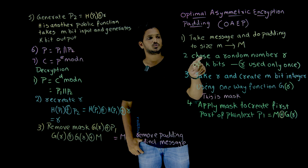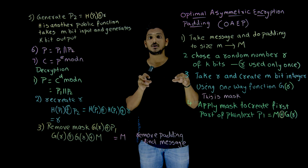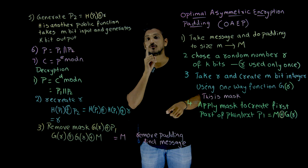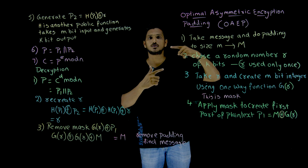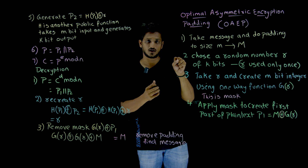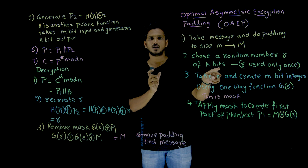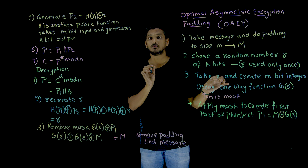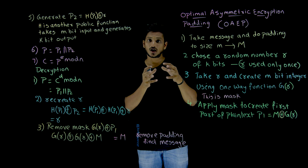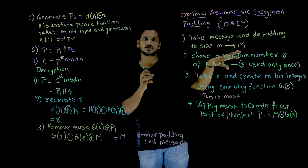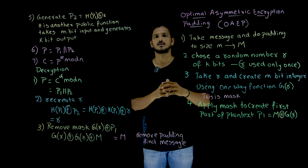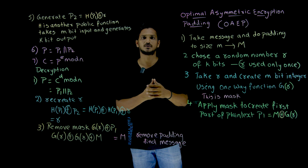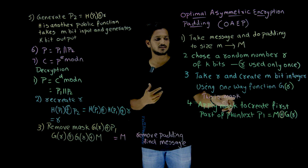Now let's understand the second step. Choose a random number R of k bits - you randomly select a number that is of k bits. This R value is used only once, meaning for each message you have to generate a new R value. Using this R, take the k-bit integer and generate an m-bit integer by using the one-way function G(R). G is a one-way function that takes R and generates an m-bit output, which we call the mask.